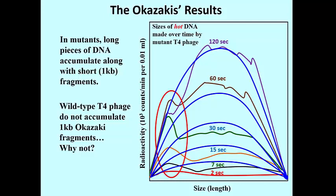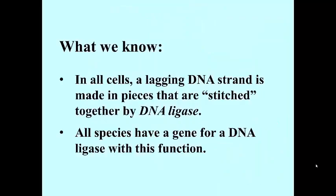In his honour, these pieces of DNA were later named Okazaki fragments. We know that new DNA made along the lagging strand template is made in pieces that are later stitched together by DNA ligase, and that this occurs in all species and all cells. We also know that all species have genes for their own DNA ligase, and can therefore make their own enzyme when they replicate their own DNA.